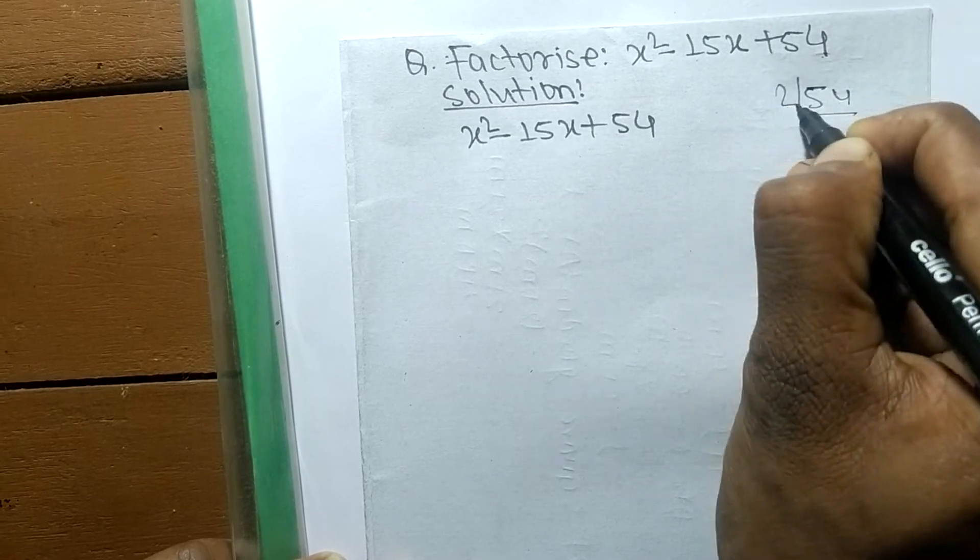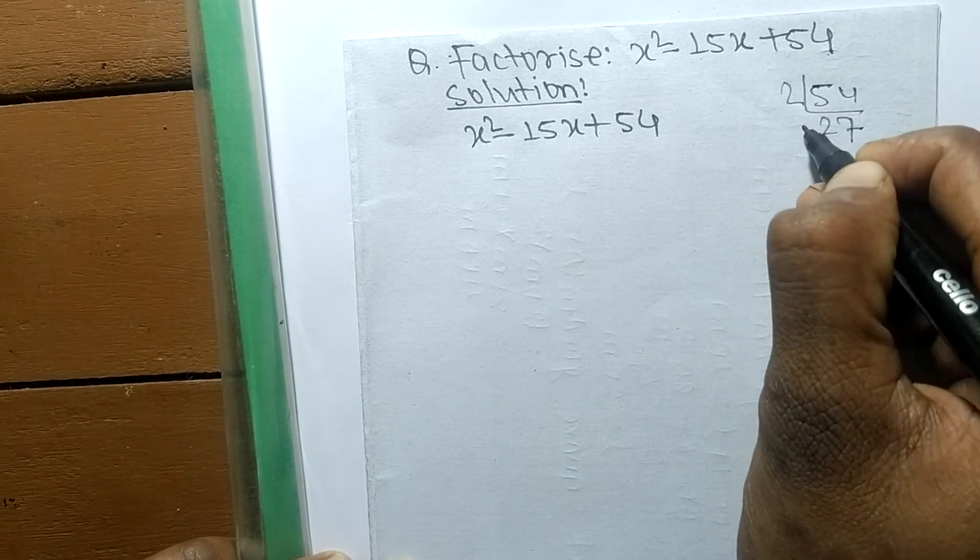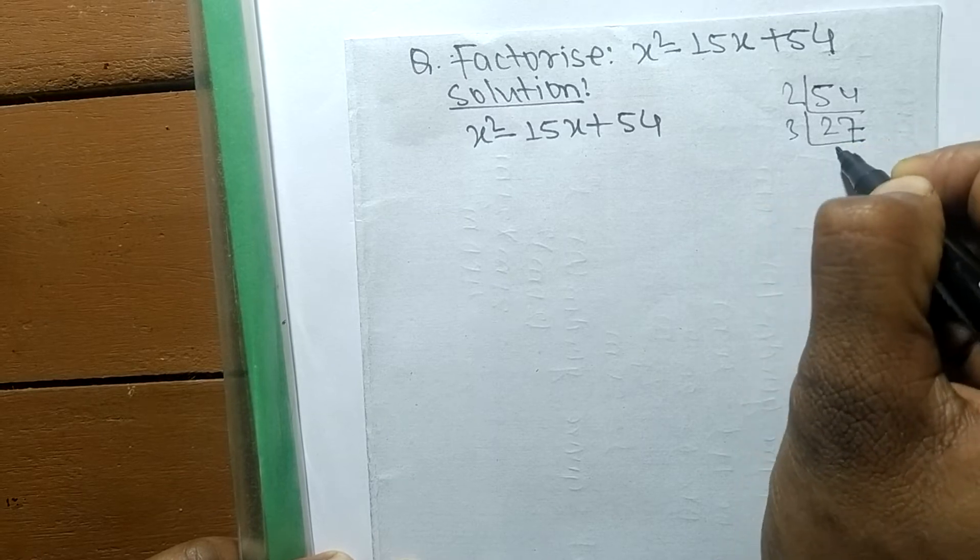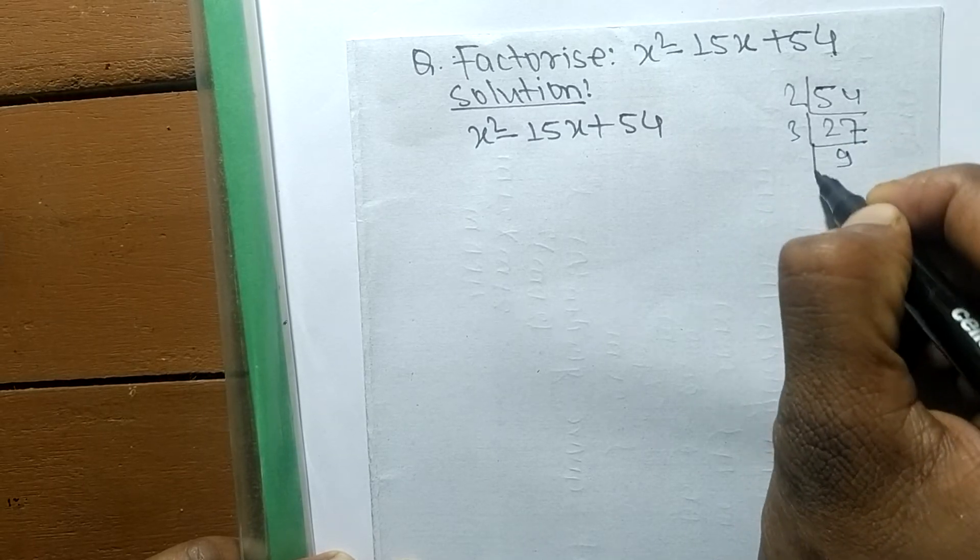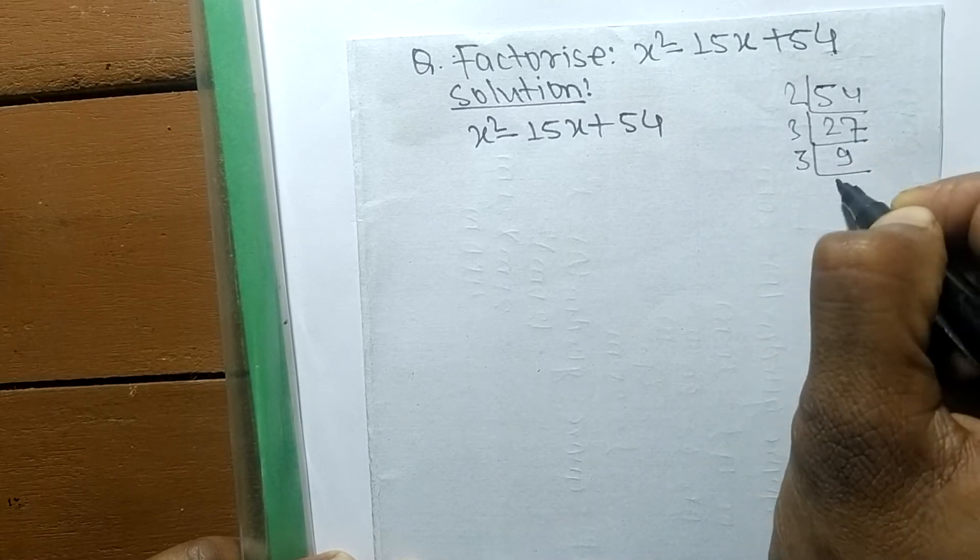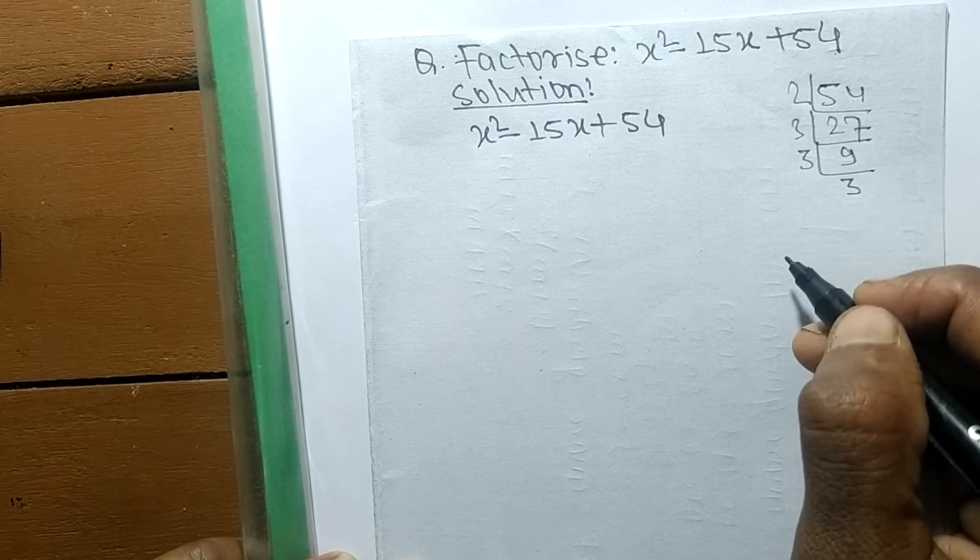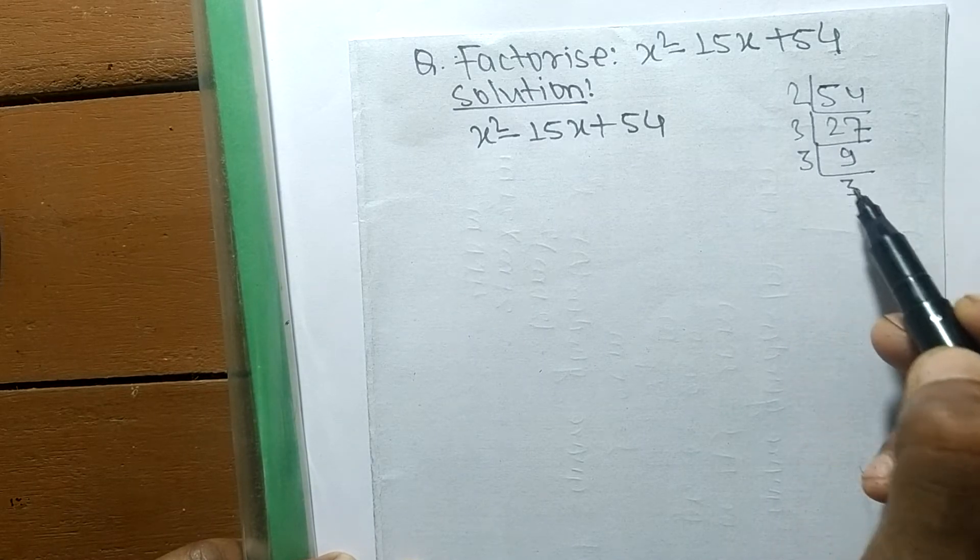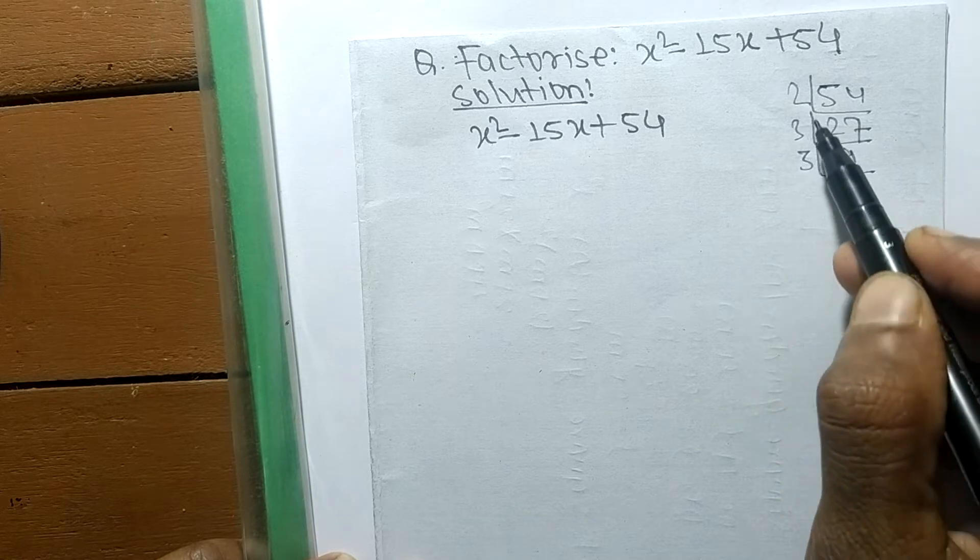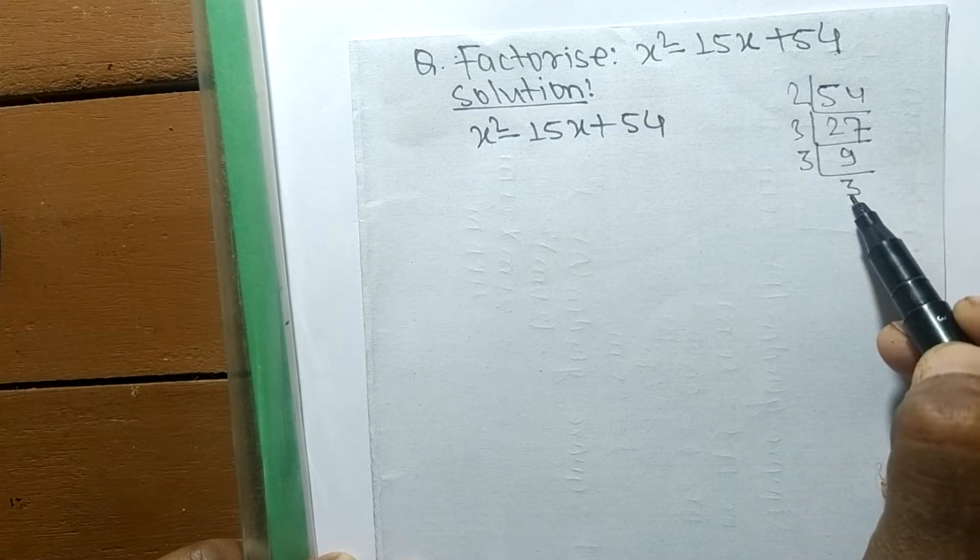It is 2 times 27, which equals 54, then 3 times 9 equals 27, and 3 times 3 equals 9. So we got the numbers 2, 3, 3, and 3. From within these numbers by multiplying, we have to take such a number that by adding we get 15.